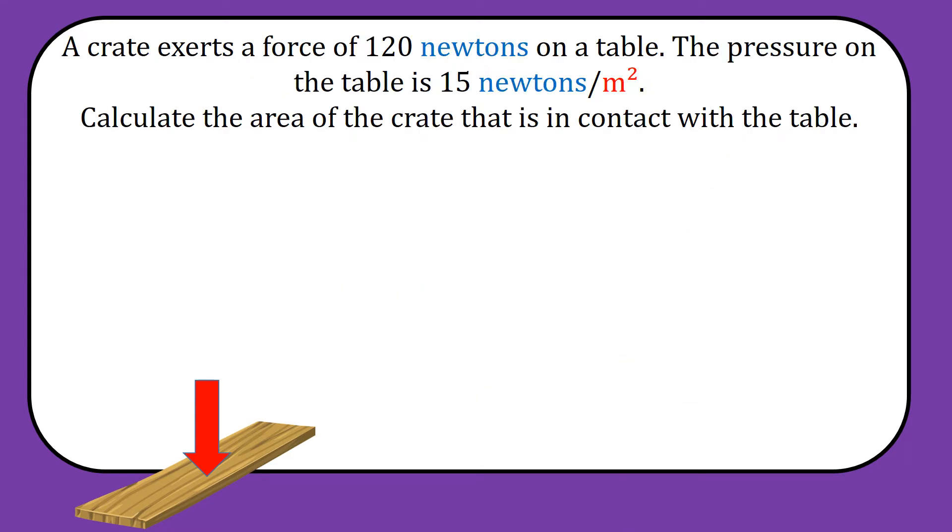Next example. A crate exerts a force of 120 newtons on a table. The pressure on the table is 15 newtons per metre squared. Calculate the area of the crate that is in contact with the table. It's quite a wordy question.